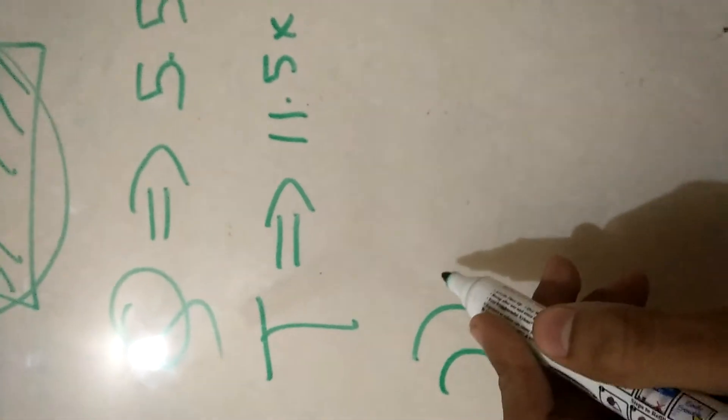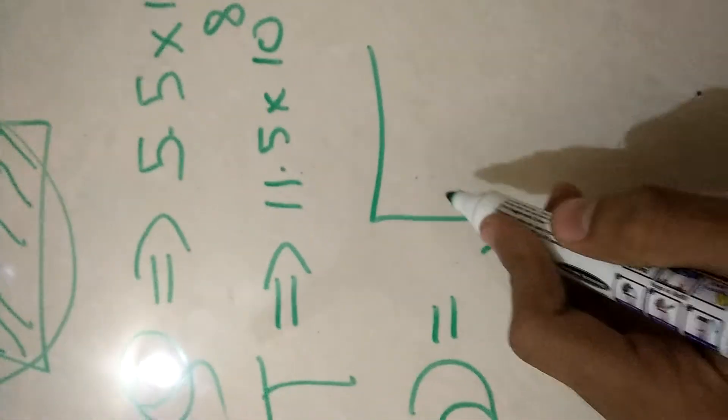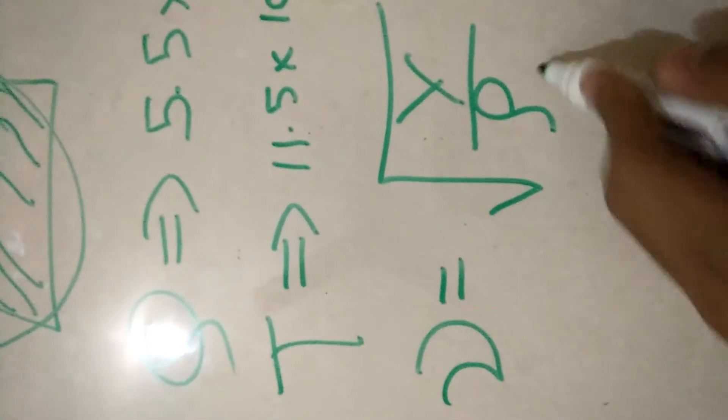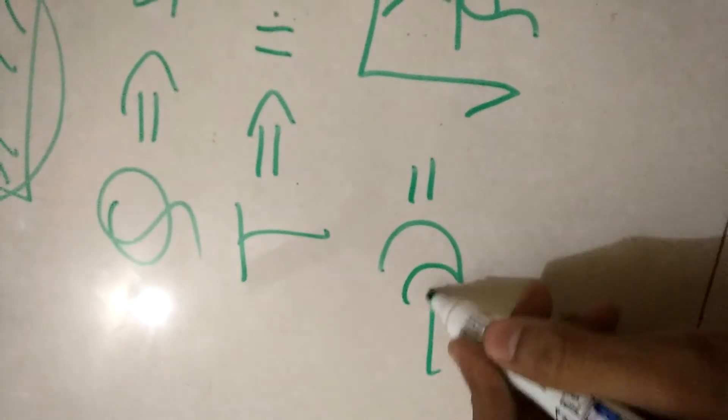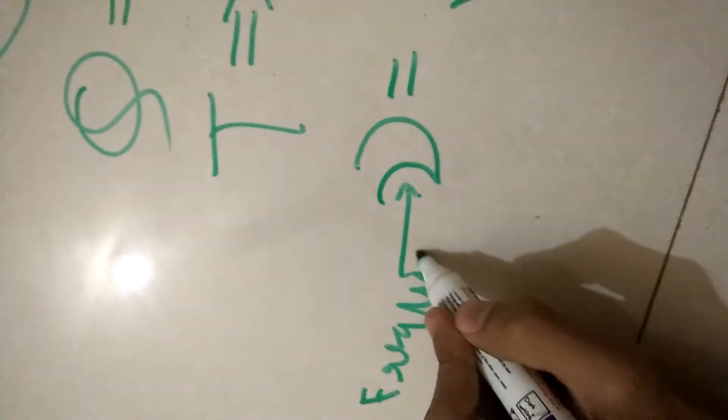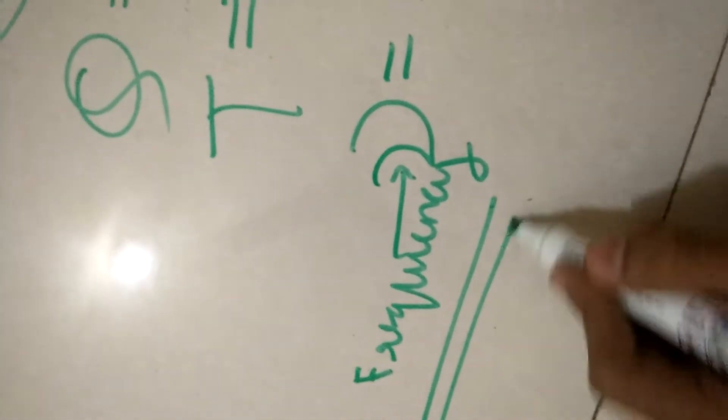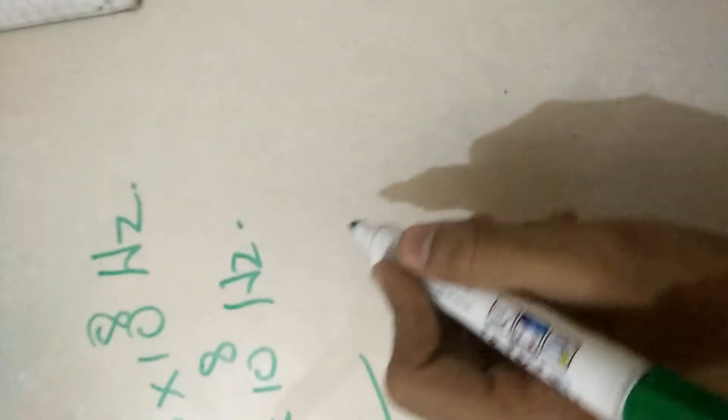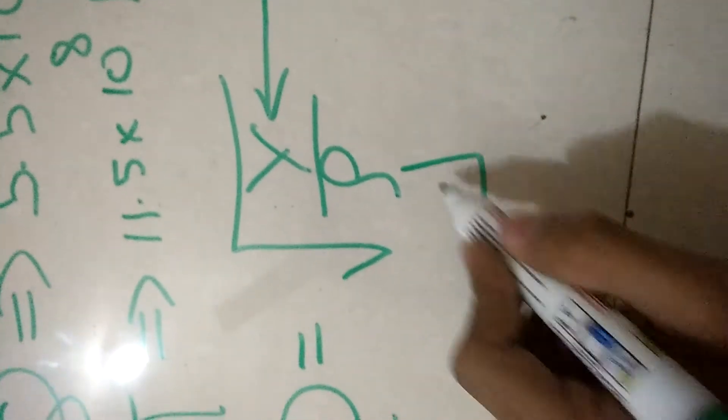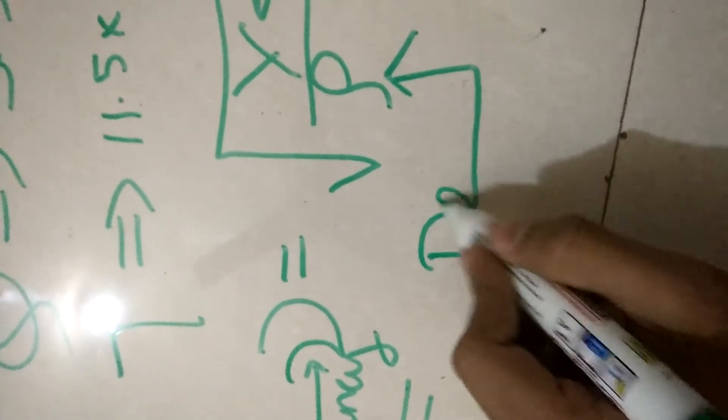Nu that is frequency is equal to under root of Y upon rho, where nu resembles the frequency, Y resembles the Young's modulus, and rho resembles the density of the crystal.